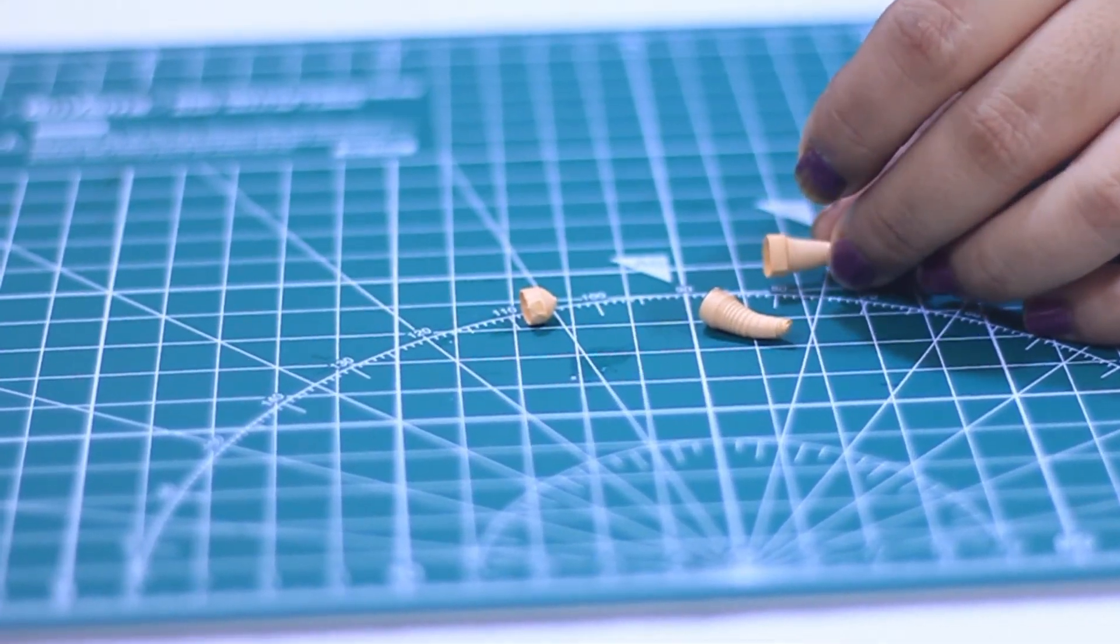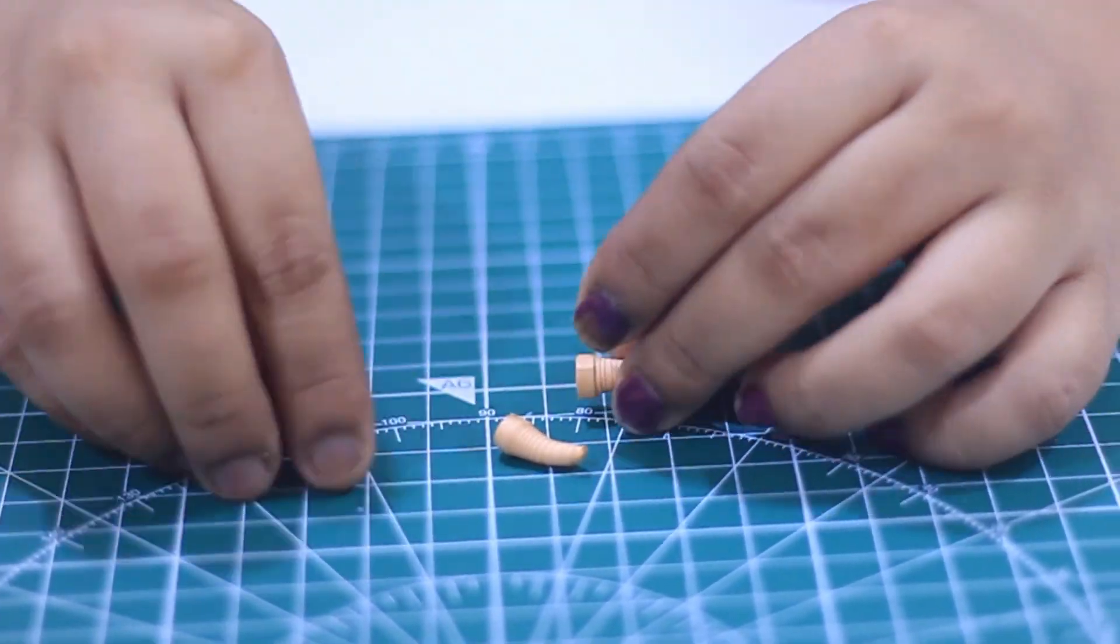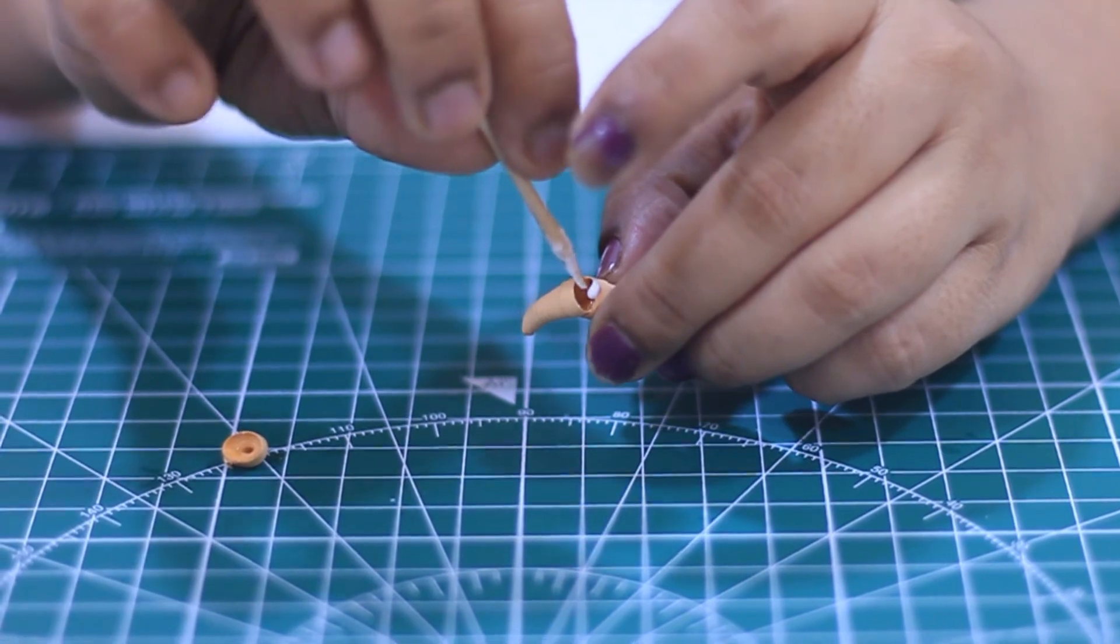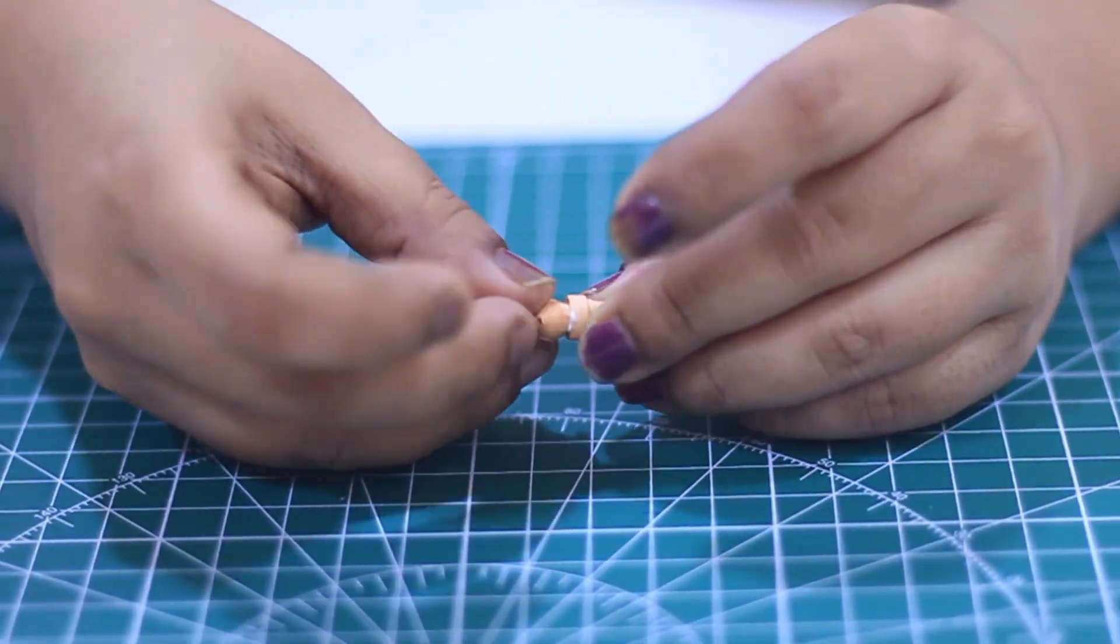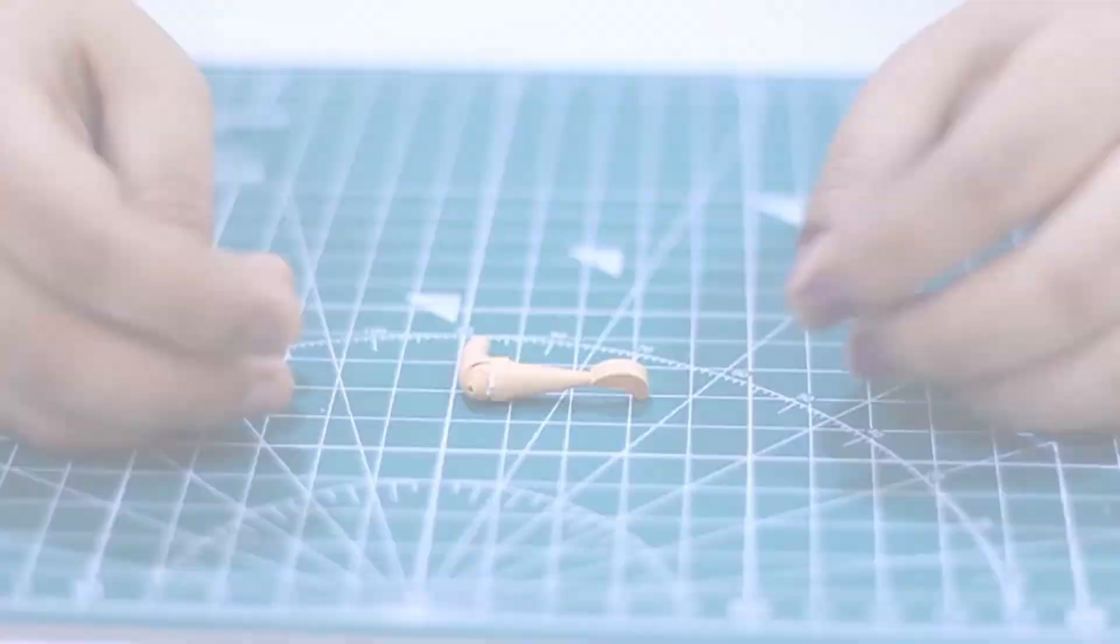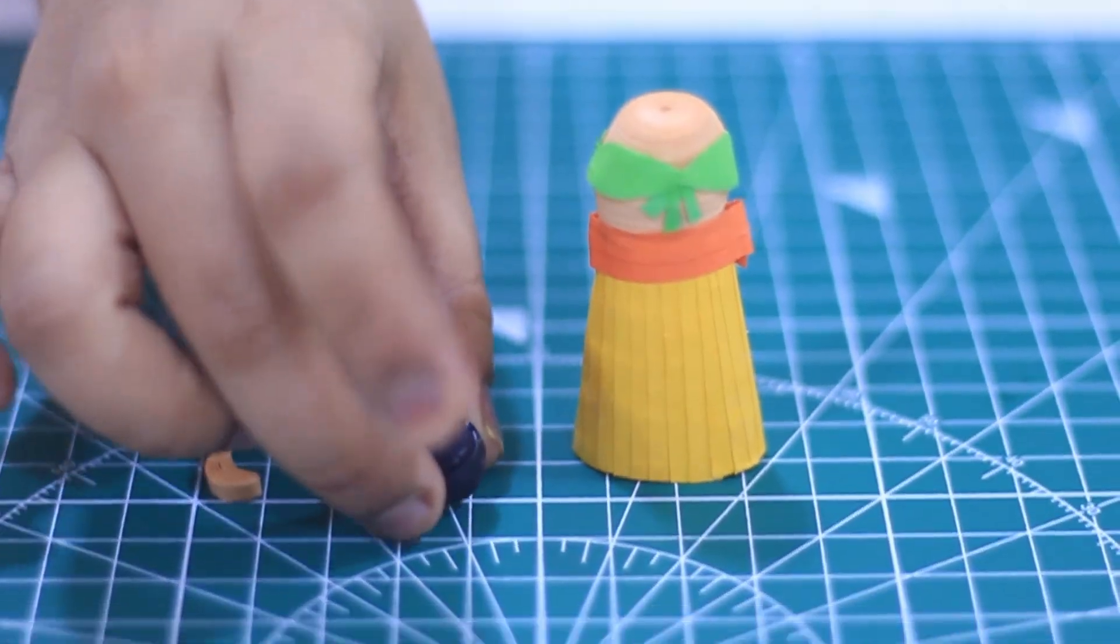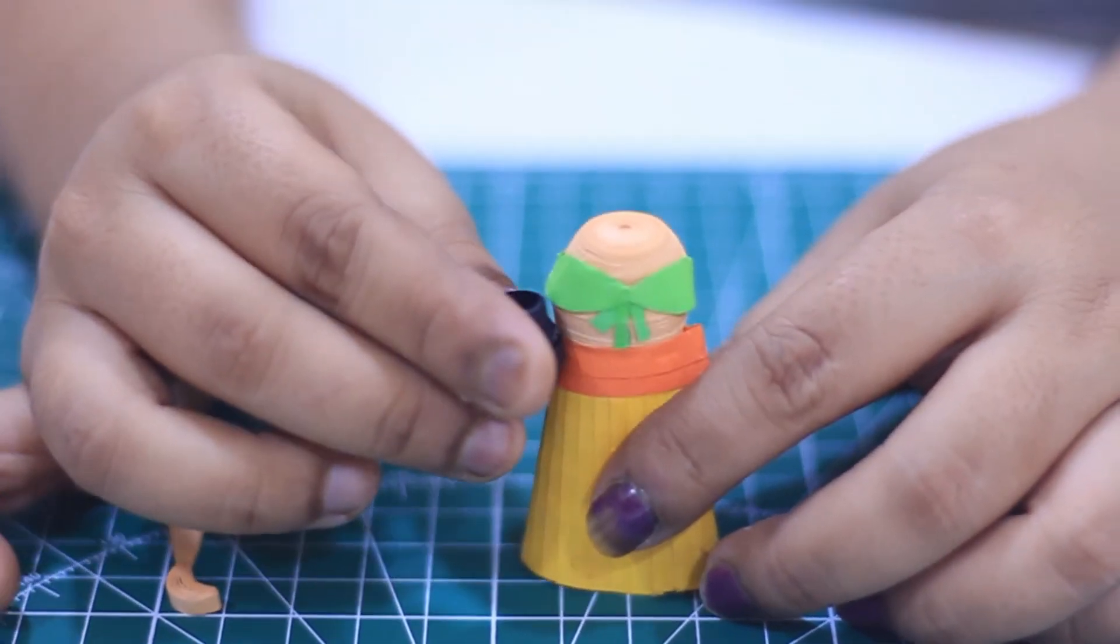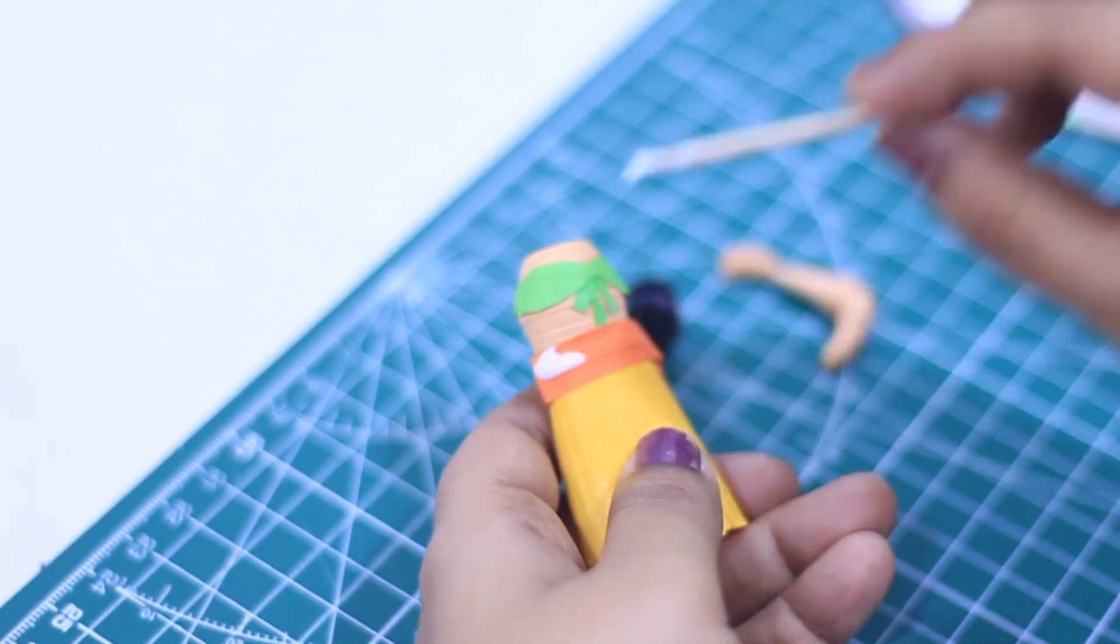Now let's assemble hands. I am sticking upper hand and the lower hand and in between I am adding elbow so that it looks like a hand. I have already made a palm. Now let's assemble the matki to Radha near the waist. First let's apply glue and stick the matki, hold it for some time otherwise it will fall.